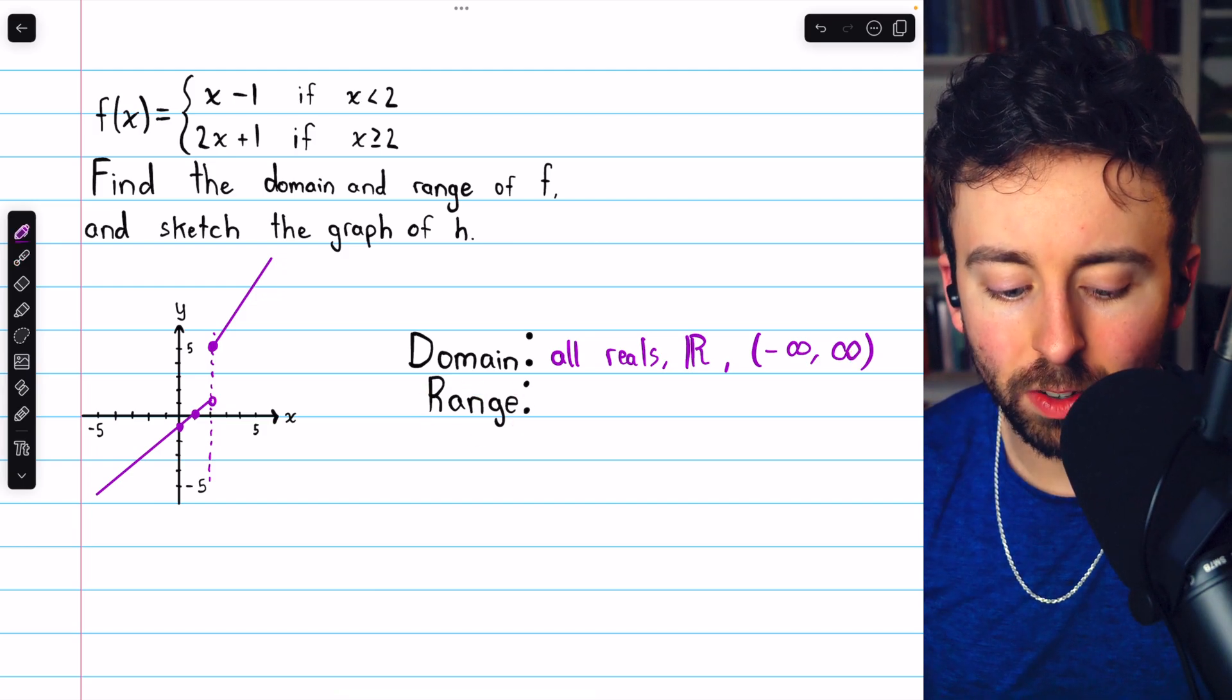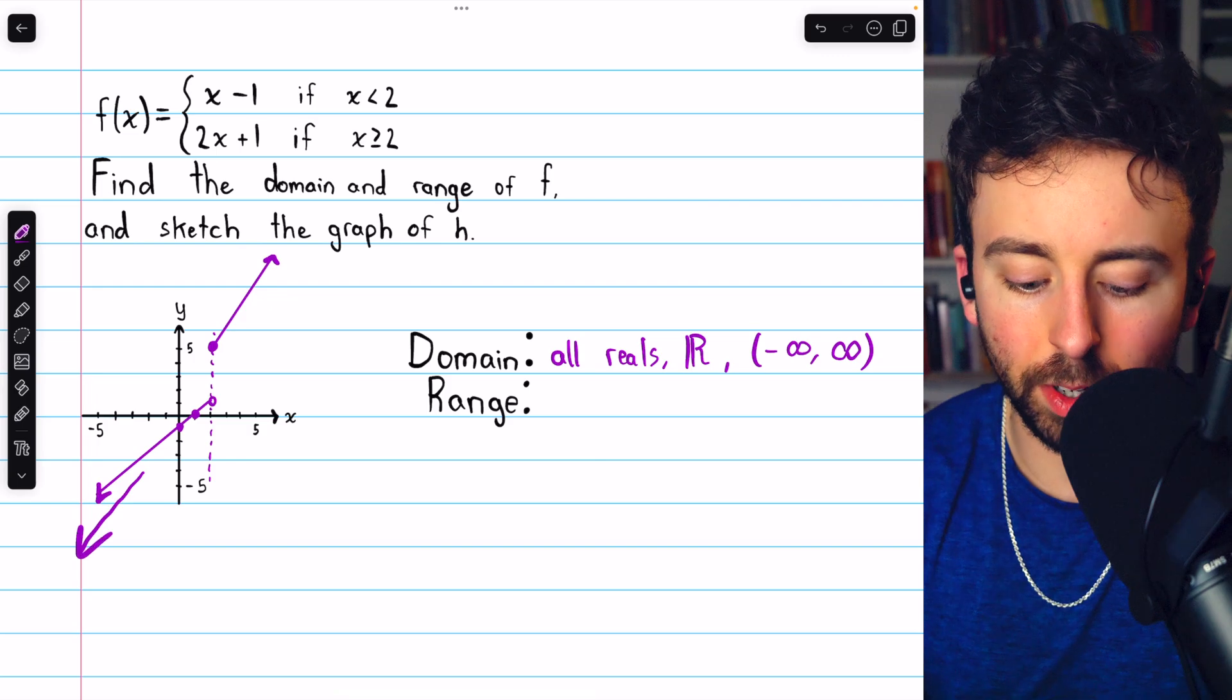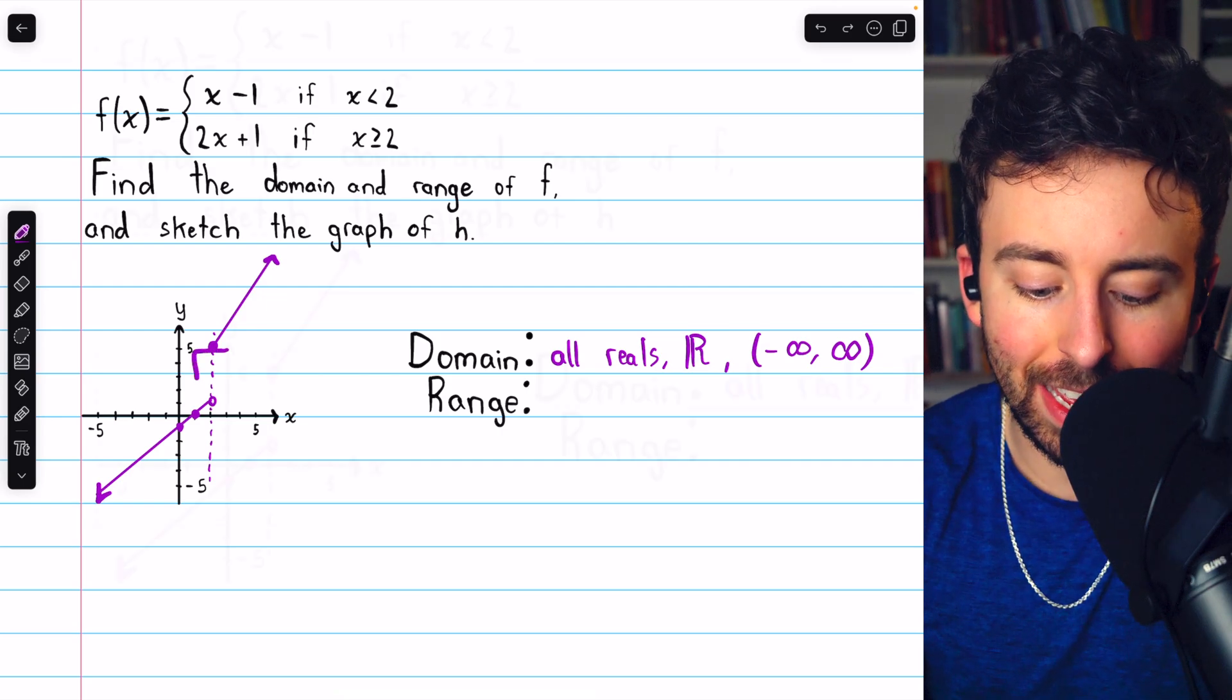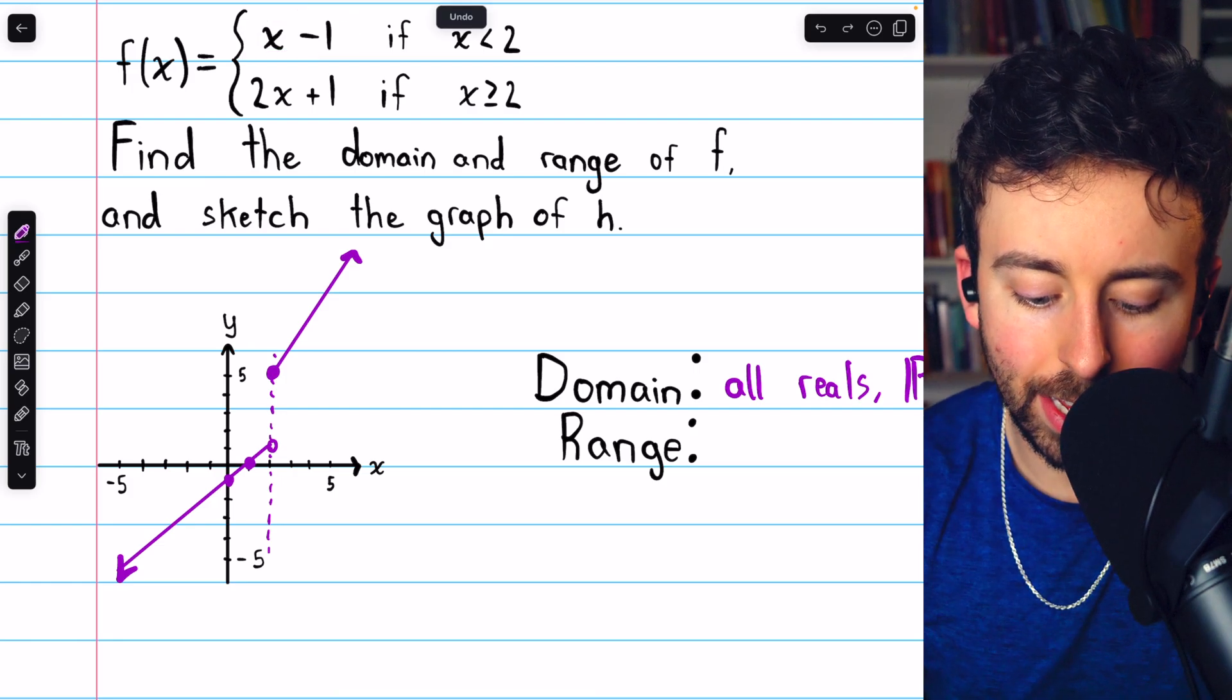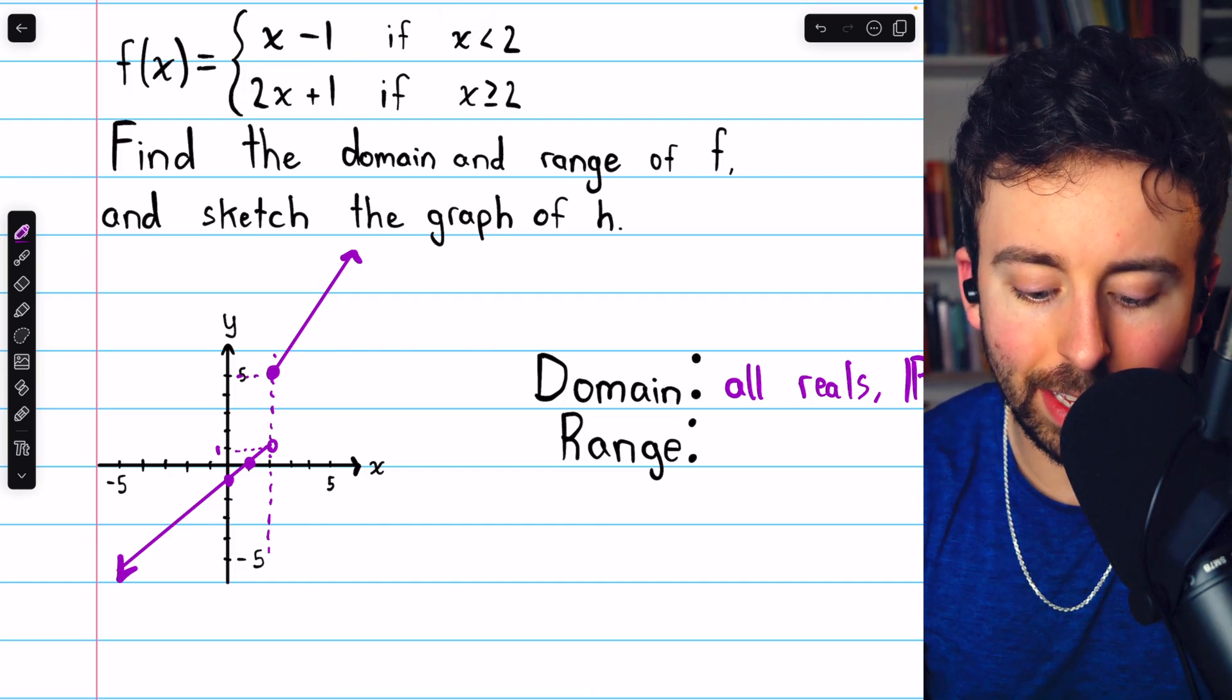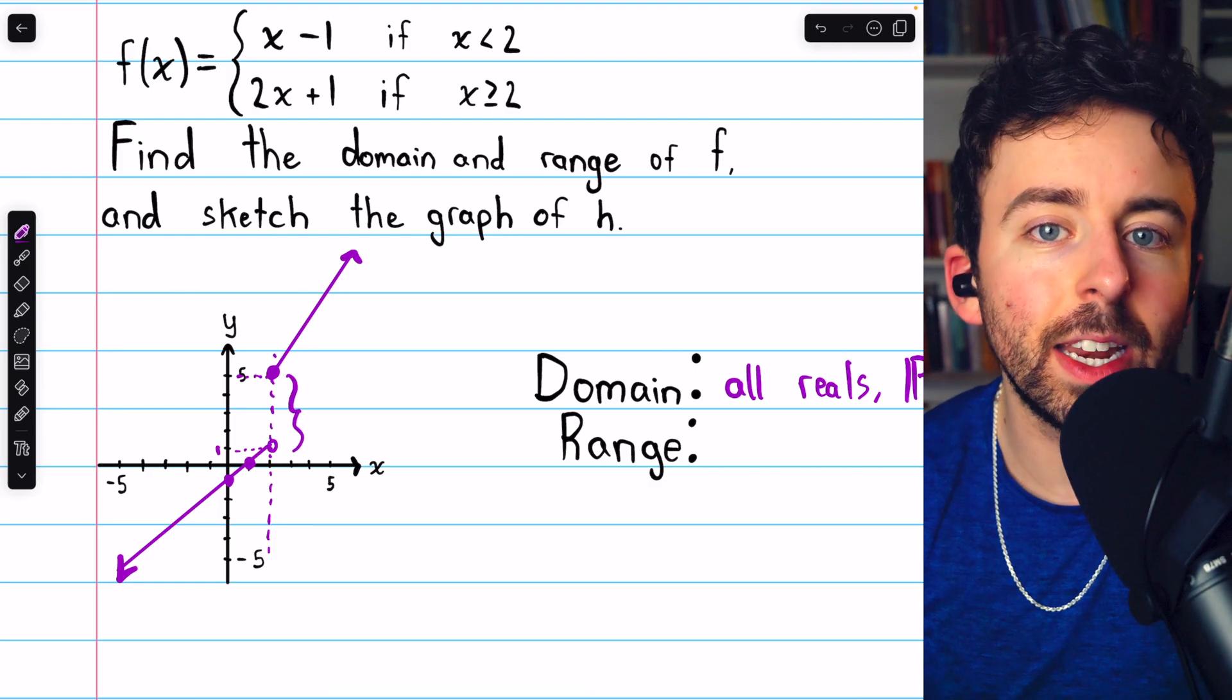Now, what about the range? Well, the line is going to go up to positive infinity in this direction. And then this line down here will be going to negative infinity in that direction. So we're going to get most of the y values. There's just one little gap right here. When x equals 2, this first part of the function is at y equals 1. And there's a little hole there. And then when x equals 2, this part of the function is at y equals 5. So everything between 1 and 5, those are actually y values that this function never takes on. And so those are not in the range.